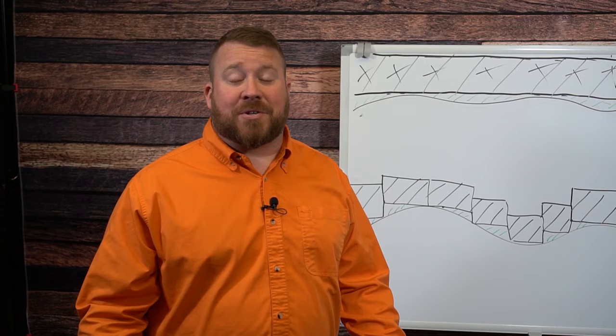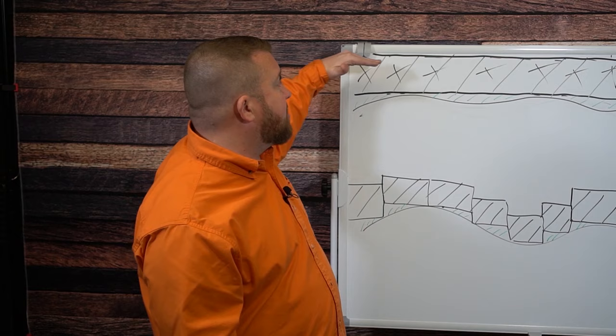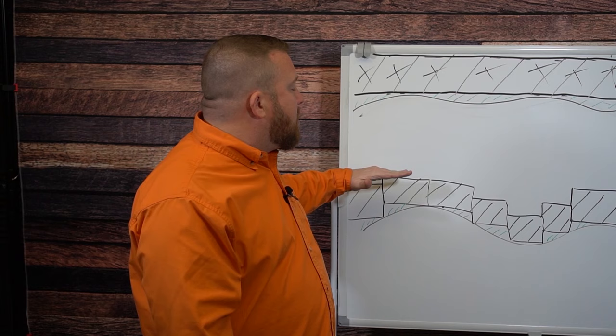When you build a fence on site, meaning you're building a custom fence, you can actually build that fence to accommodate the varying terrain. So rather than have a straight line top but leave a gap at the bottom, or stair-step it, again leaving a gap, you can build that fence to follow the varying terrain.